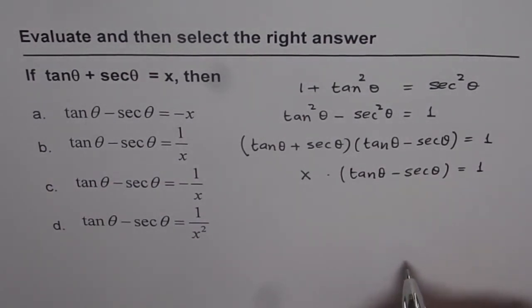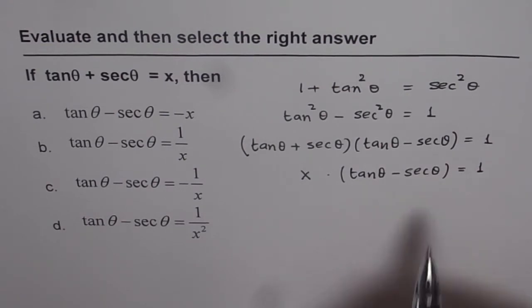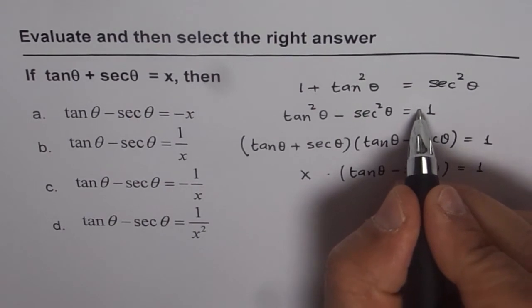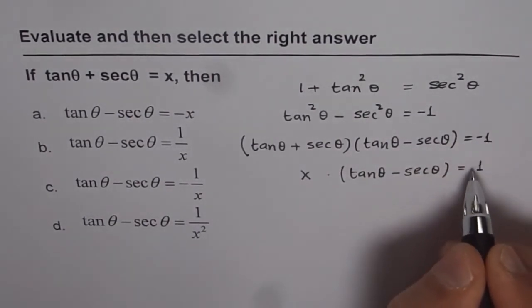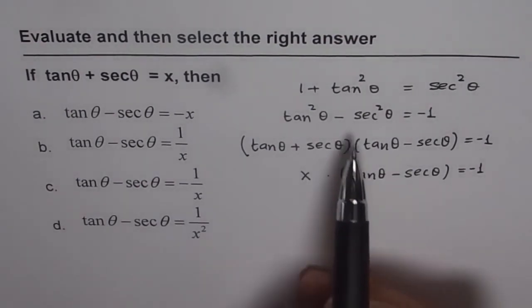And therefore, from here, well I did a mistake right from the very beginning. When I took 1 to the right side, I should have written this as minus 1. I hope some of you must have noticed that. Well, I notice it right now. So, let us go back.